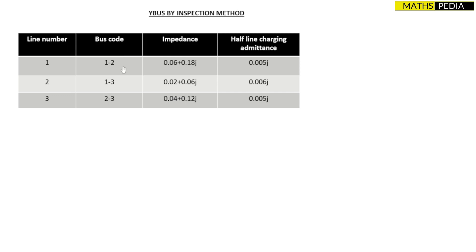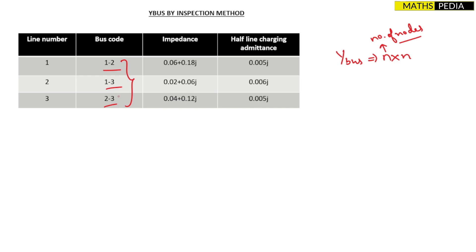First, you need to understand how many nodes there are, because the order of Y-bus is n×n, where n is the number of nodes. If you see this column — bus node 1 to 2, 1 to 3, 2 to 3 — the maximum number is 3, so there are 3 nodes total. Therefore Y-bus is always a symmetric square matrix, and in this question it is of order 3×3.